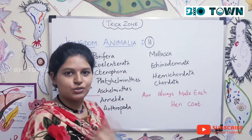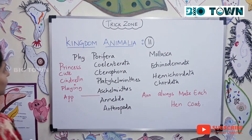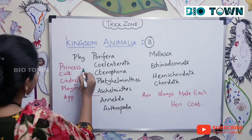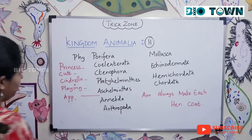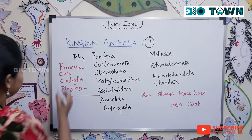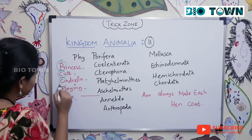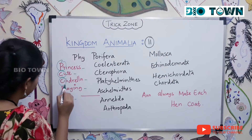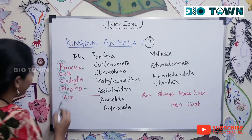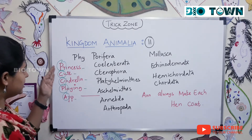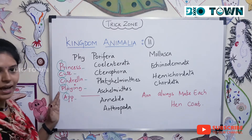Now in just two minutes you can easily remember all this. The first mnemonic is: 'Princess cute Cinderella playing app' — covering Porifera, Cnidaria, Ctenophora, Platyhelminthes, and Aschelminthes.